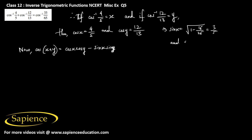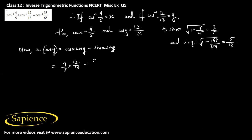Similarly, sin y equals square root of 1 minus cos squared y, which is 144 by 169, giving square root of 25 by 169, which is 5 by 13. So substituting, cos x is 4 by 5, cos y is 12 by 13, sin x is 3 by 5, and sin y is 5 by 13.